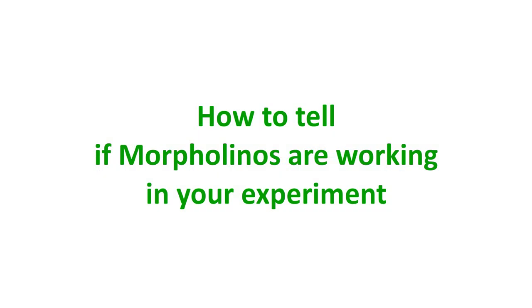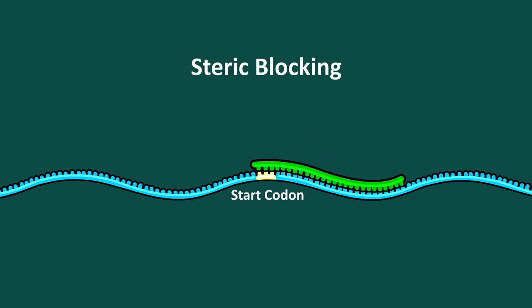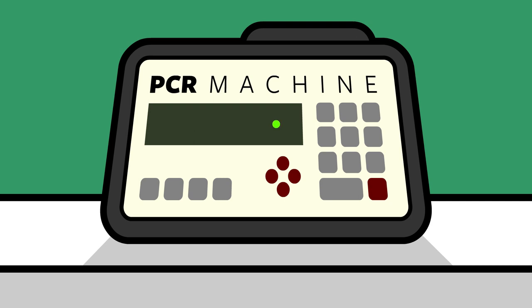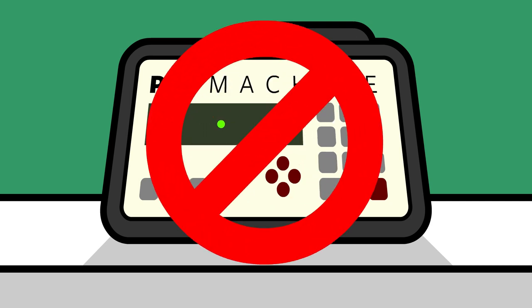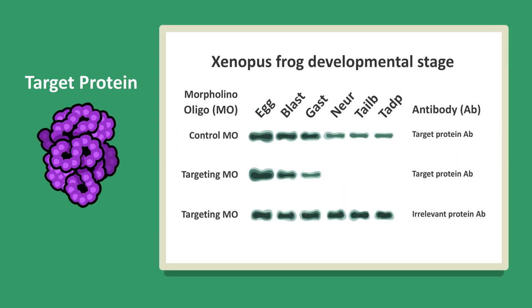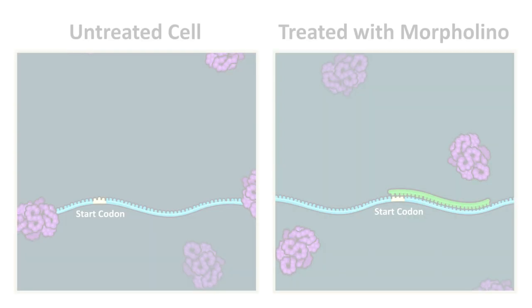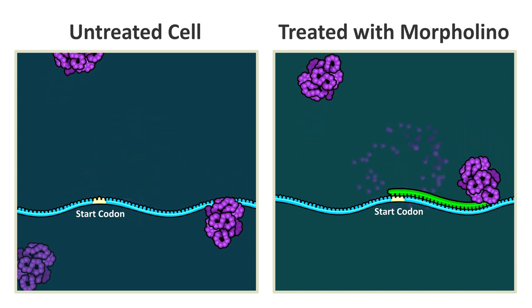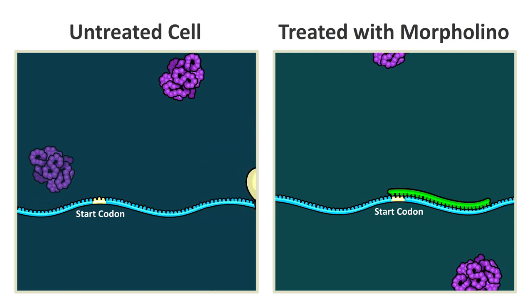How to tell if morpholinos are working in your experiment? Unlike certain other antisense molecules, steric-blocking morpholinos don't cleave their RNA targets. That means you can't reliably use an RNA-based method like reverse transcriptase PCR to see if your translation-blocking morpholino oligo is working. Instead, you need a protein assay to see if the concentration of the protein is decreasing as old protein is degraded and translation of new protein is blocked. This almost always involves an antibody, and usually a western blot is done to see if the protein band is becoming more dim compared to a sham-treated control. You won't see strong protein knockdown if you assess the concentration of the target protein right away, because the morpholino doesn't degrade the protein that was already in the cell — it just inhibits synthesis of new protein.